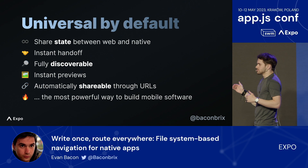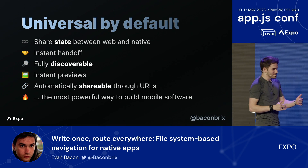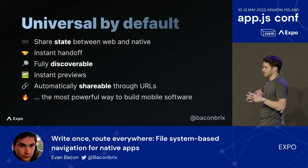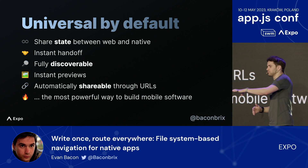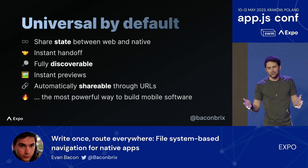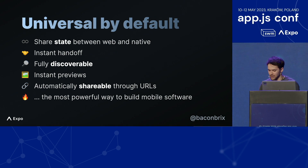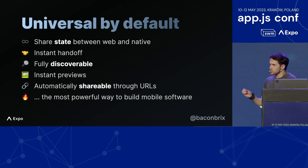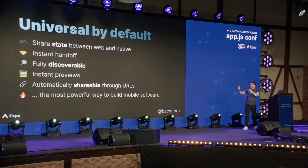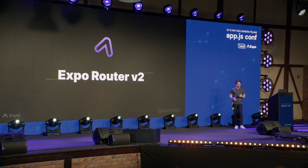What if universal links were actually the default and not some complex feature you add later? What if setting them up was the easiest possible way to build mobile navigation? What if instead of sanitizing URLs, we just handled them exactly and passed them to React state? What if when you wrote a React component, it was highly performant and the content inside was fully discoverable? Which is why if there were a system offering automatic universal links and automatic universal SEO, it would be one of the most powerful ways to build mobile apps. And it's exactly what we plan to deliver with the new Expo Router.